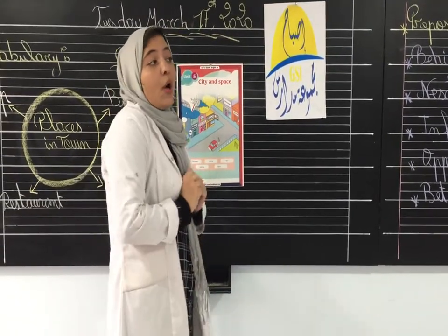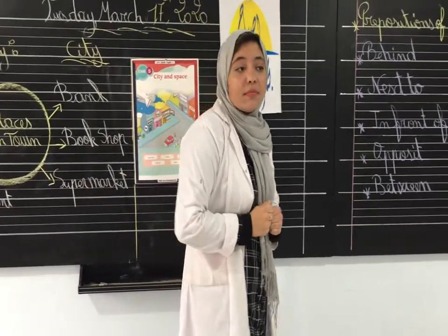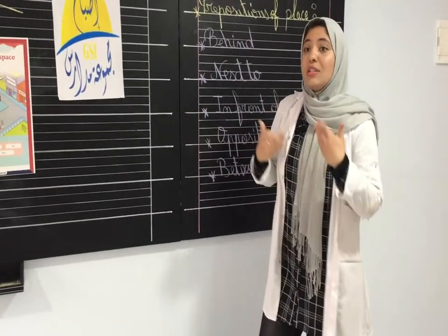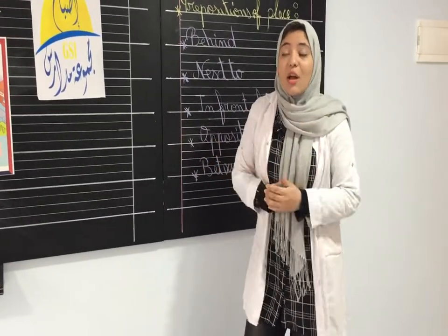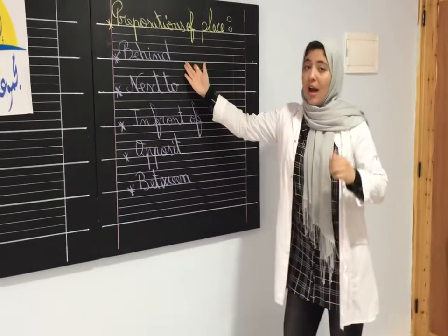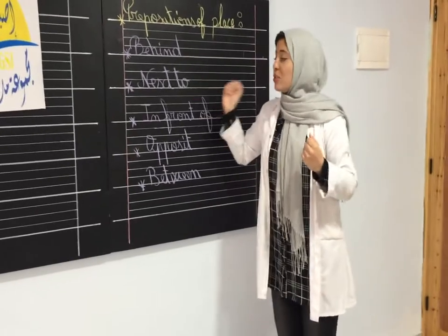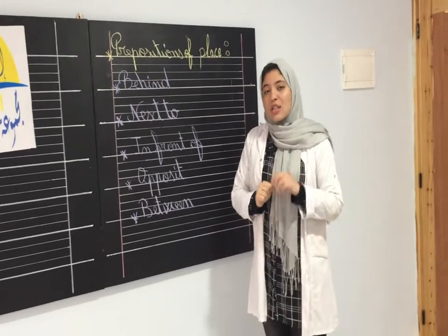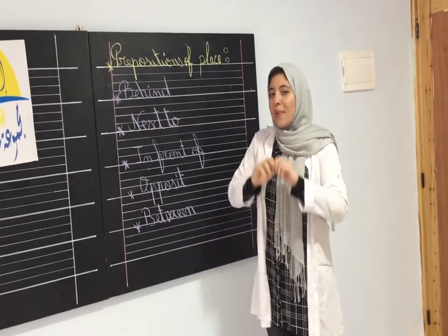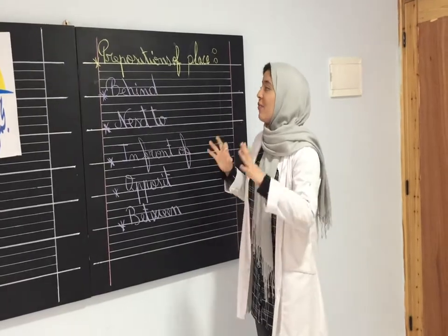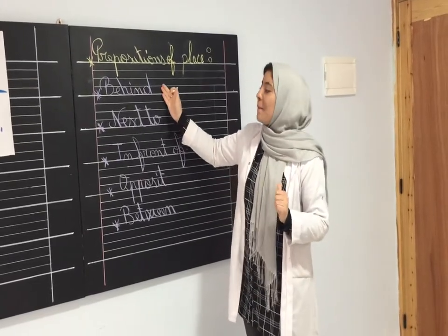For example, if I want to know where is Spice School, I ask my friend Ahmed: 'Where is Spice School?' Ahmed should tell me the direction using behind, next to, in front of, opposite, or between. So before we know the place of Spice School, let's see what each preposition means — starting with 'behind'.